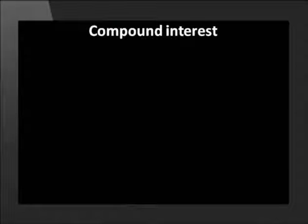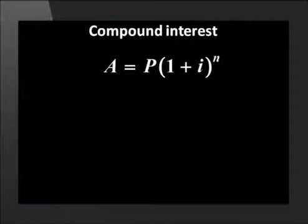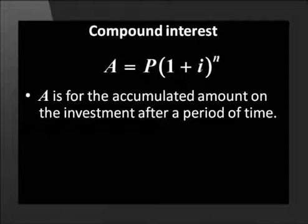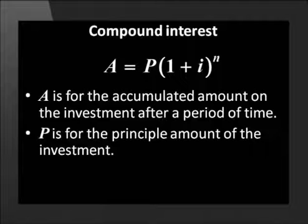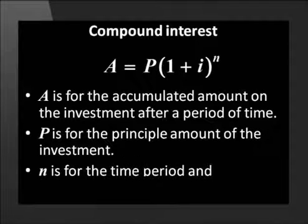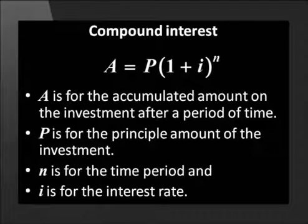The compound interest formula is A equals P times (1 plus i) to the power of n. A is for the accumulated amount on the investment after a period of time. P is for the principal or starting value of the investment. N is for the time over which the interest is calculated and i is for the interest rate which must always be substituted into the formula as a decimal.